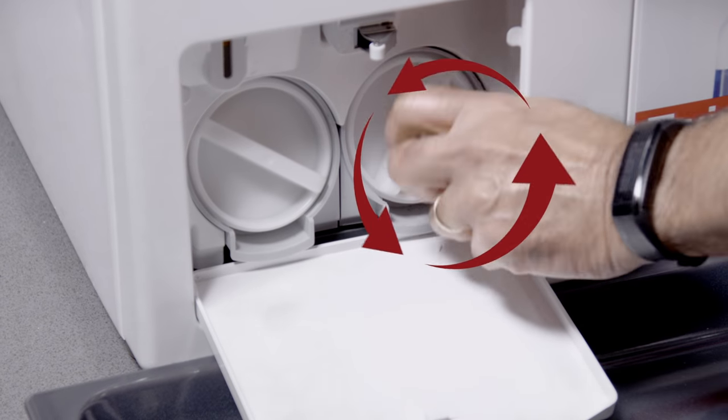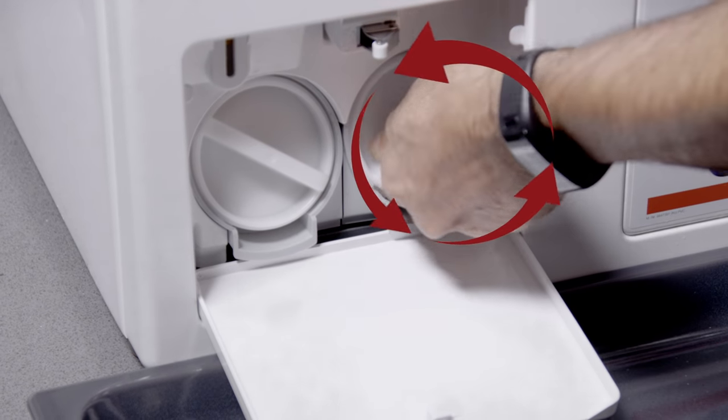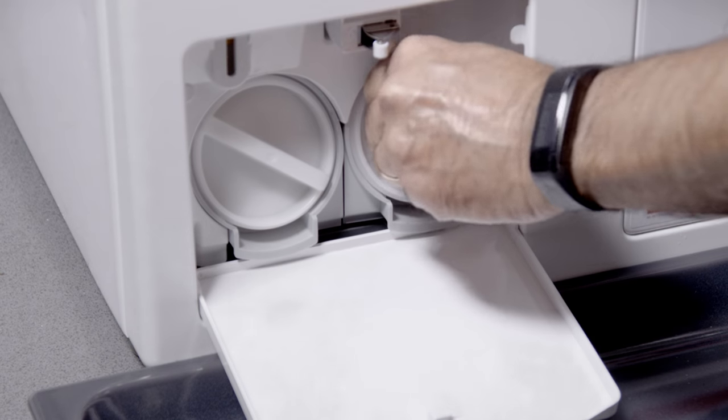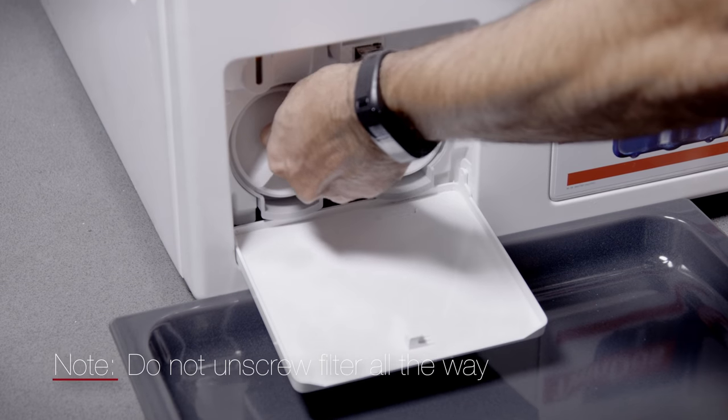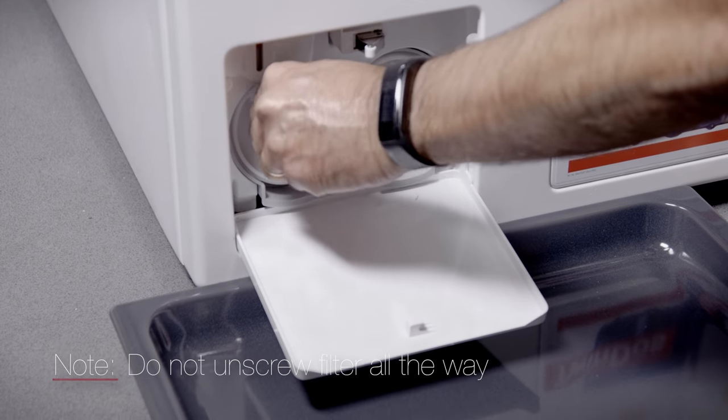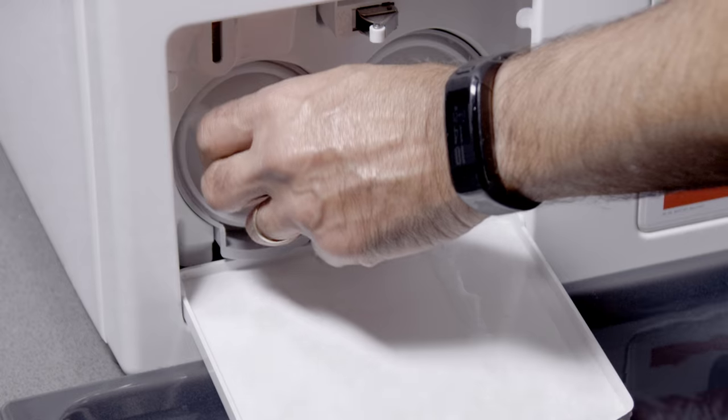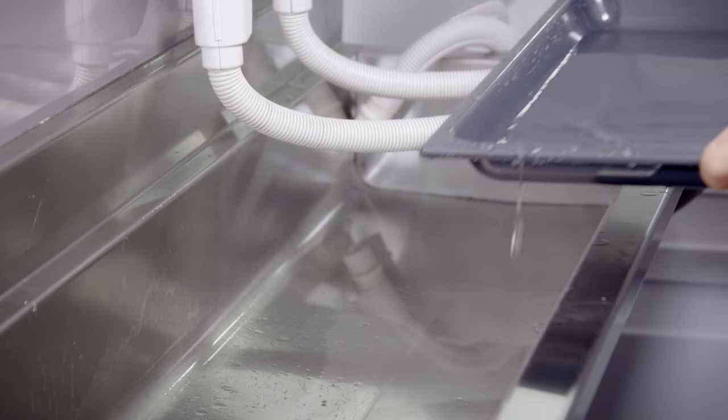To drain the water, slowly turn the drain filter's lid anti-clockwise until the water runs out, taking care not to unscrew it all the way. Depending on how much water is draining out, you may need to tighten the filter back to change containers.